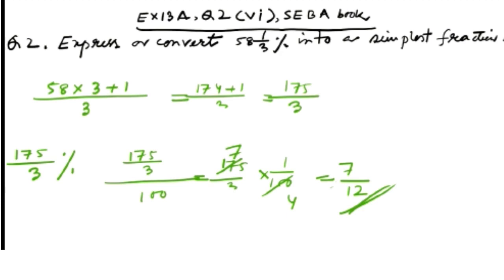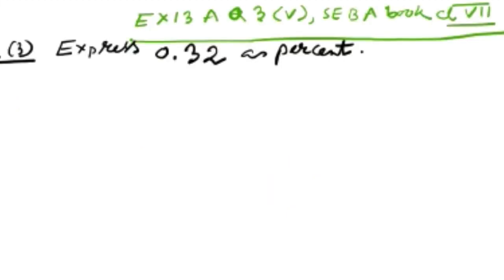Question number 3: Express 0.32 as percent. All right, now first we remove this decimal point. We know 0.32 is equal to 32 divided by 100, as two decimal places are there. I had already done these things in my fractions and decimals chapter. The same as question number 1. 0.32 is equal to 32 divided by 100, and we have to multiply by 100.